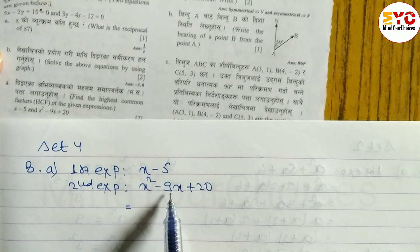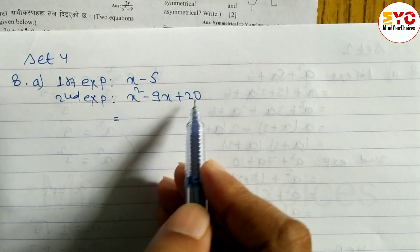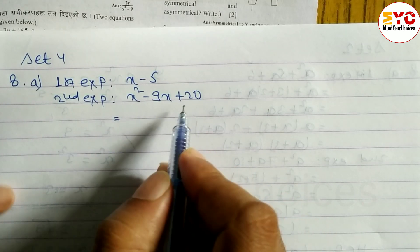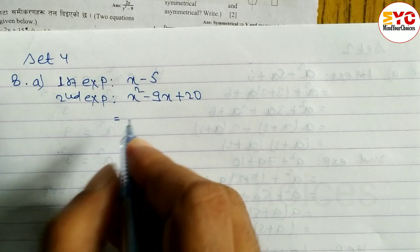Multiply to get 20, add to get 9. So multiply to get 20, add to get 9. We have to factorize this, we have to find out the factor. Multiply to get 20, add to get 9.